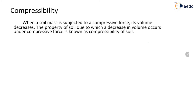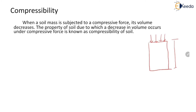Suppose this is the soil mass which is under consideration. When it is subjected to a compressive force, its vertical dimension will get reduced. Because of this reduction in vertical dimension, its volume will also decrease. This property is called compressibility of the soil.